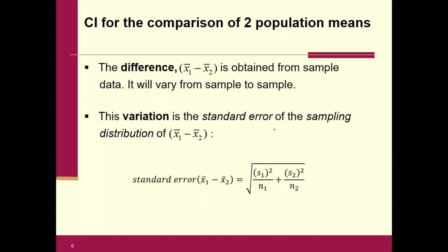Here's the formula for the standard error: take the standard deviation from the first group, square it, and divide by n one. Add to that the standard deviation from the second group squared divided by n two. Then take the square root of the whole thing. That is the standard error.